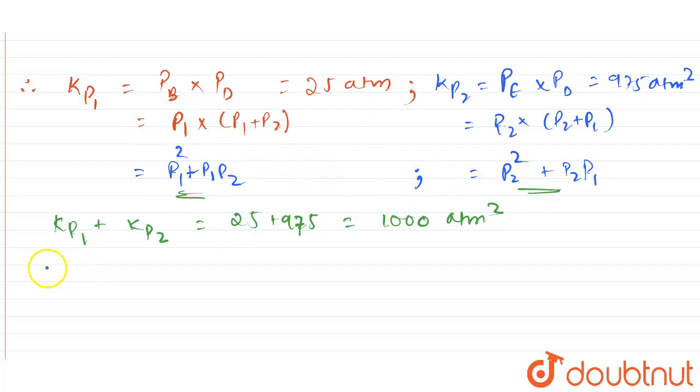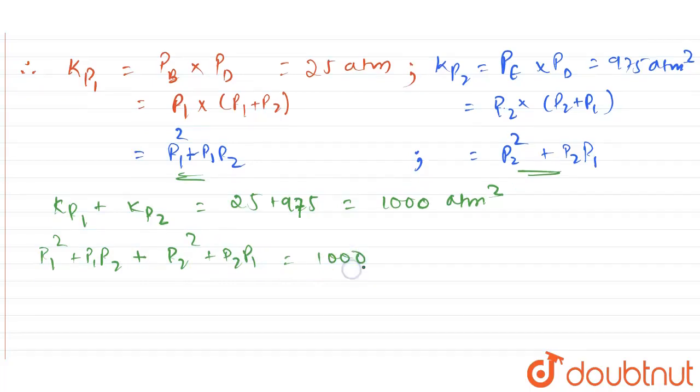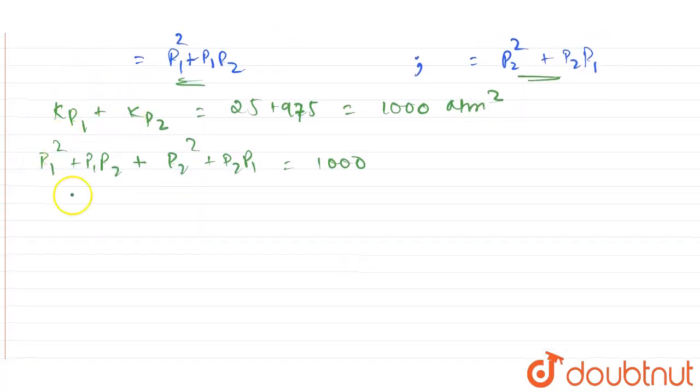This value, the sum of Kp1 and Kp2, is going to be P1 square plus P1 P2 (this is Kp1) and Kp2 is P2 square plus P2 P1, and this is equal to 1000.